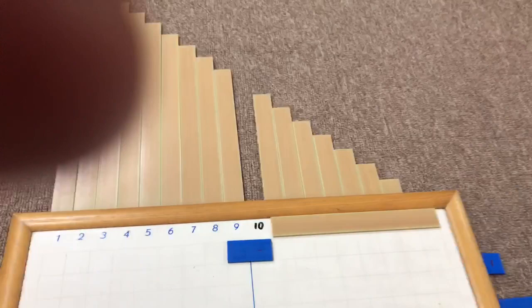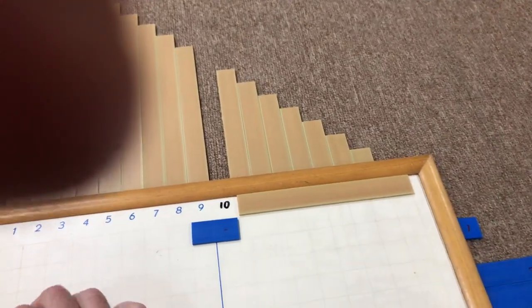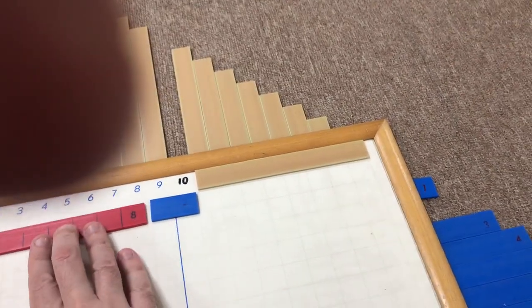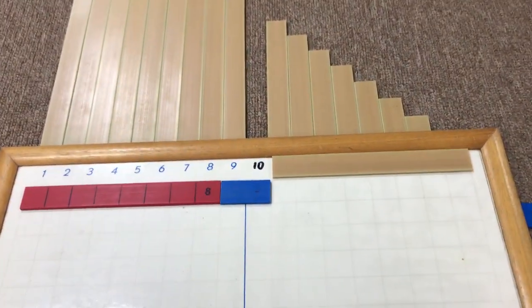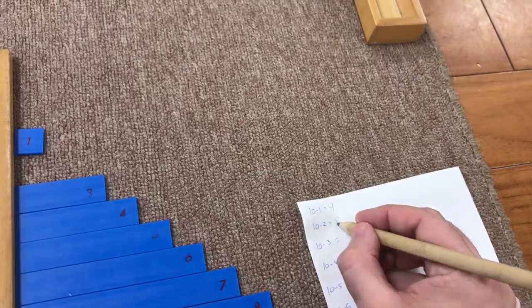They don't have to count it, right? They're already into some abstraction there already. So 10 minus 2 equals 8. So record our answer. And you'll go through that the whole time.